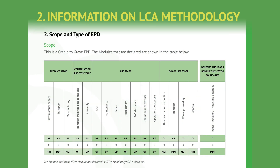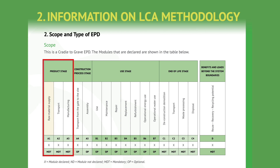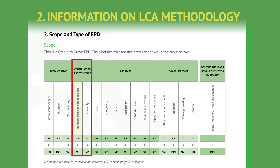In EPDs, the different stages of the life cycle of the product are divided into modules. There are three production modules: A1, which covers the quarrying, mining, or harvesting of raw materials; A2, which covers the transport to the production site; and A3, which covers the manufacturing itself. The construction process stage is covered by module A4, the transport to the site, and A5, the integration of the product into the building or infrastructure.